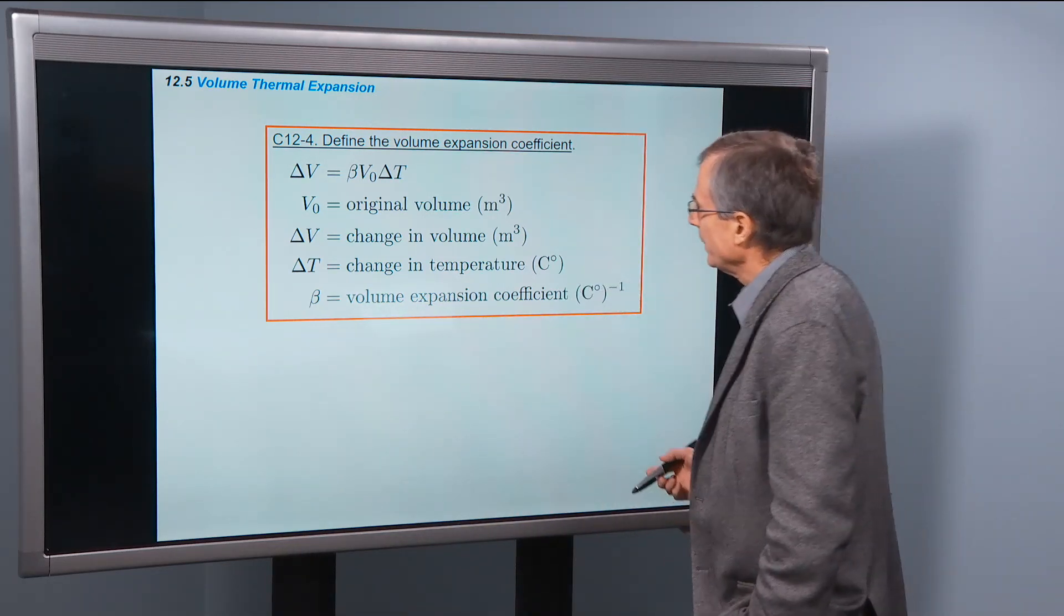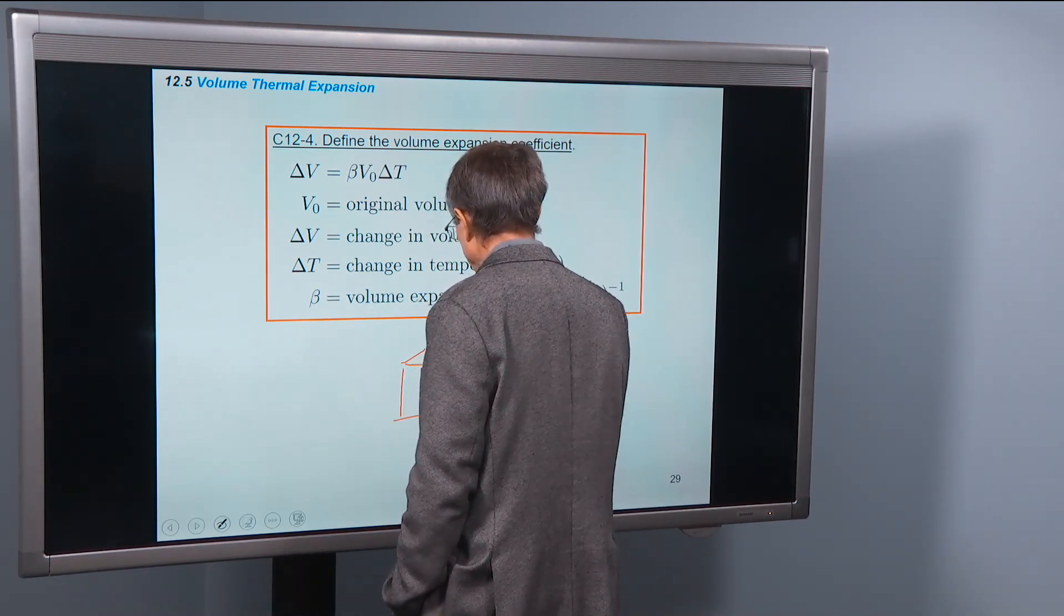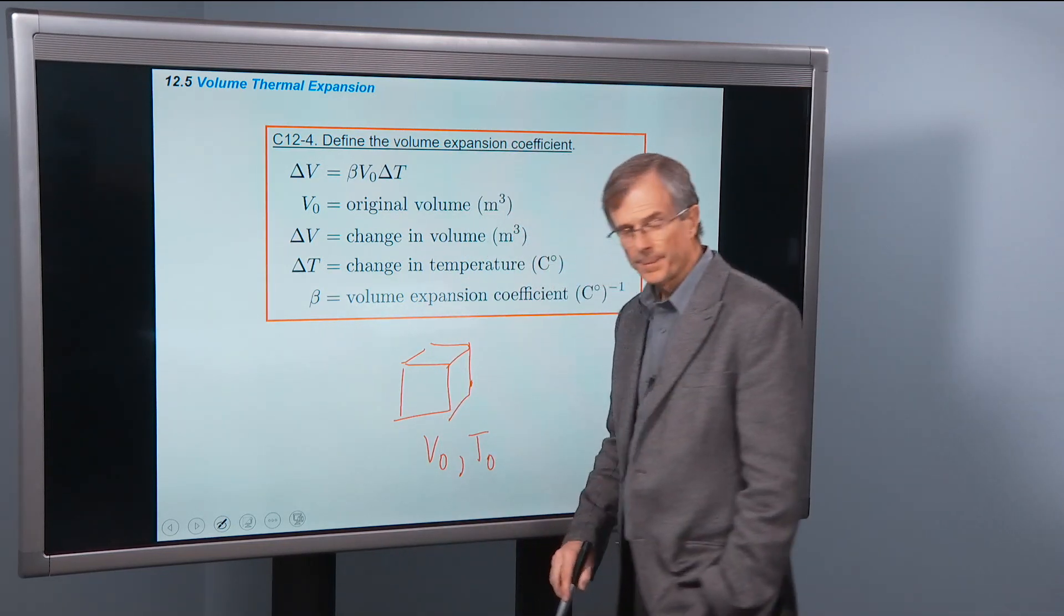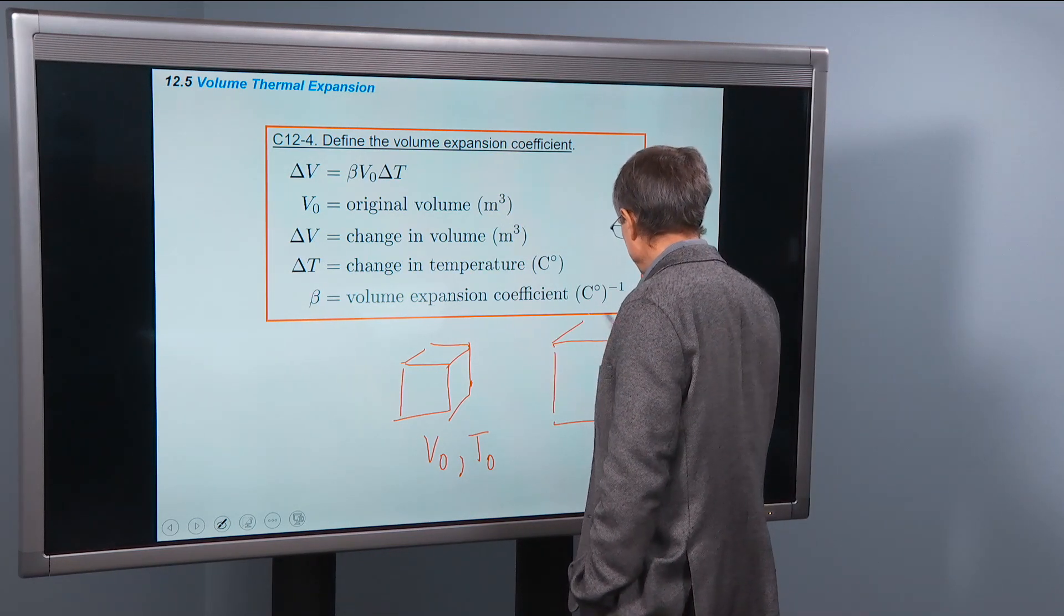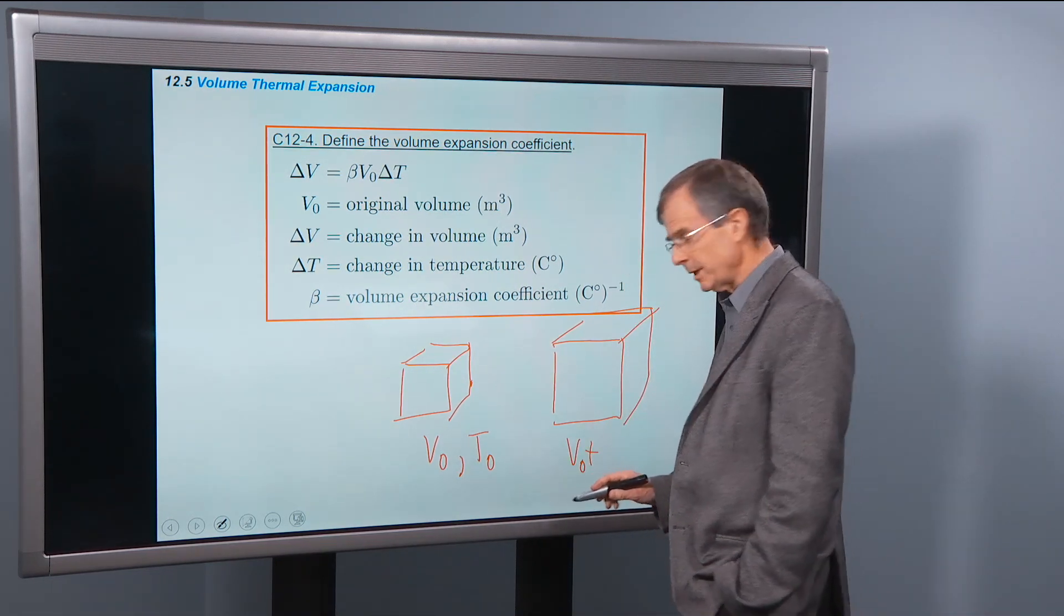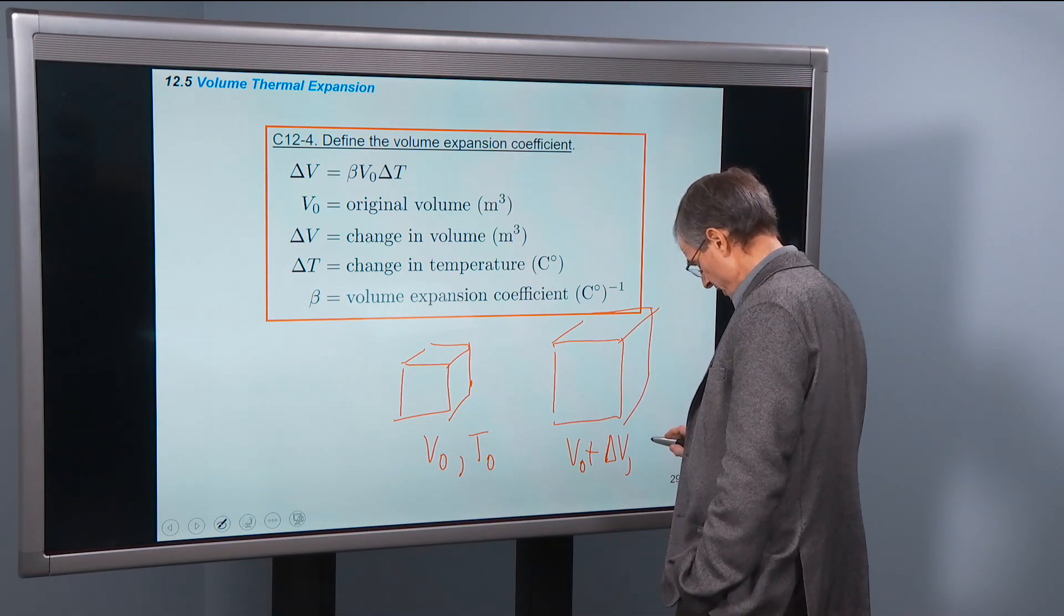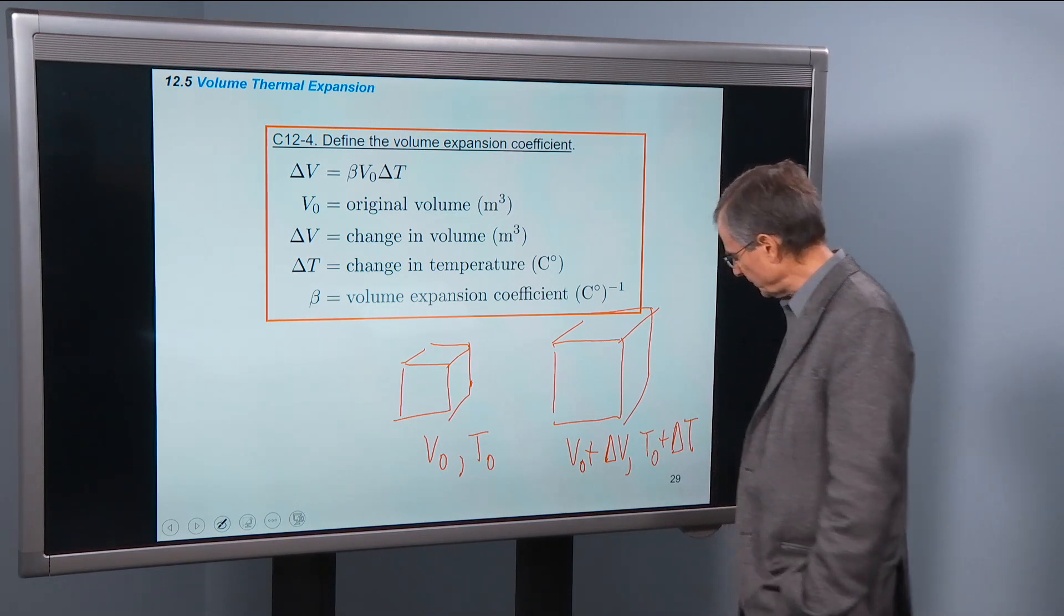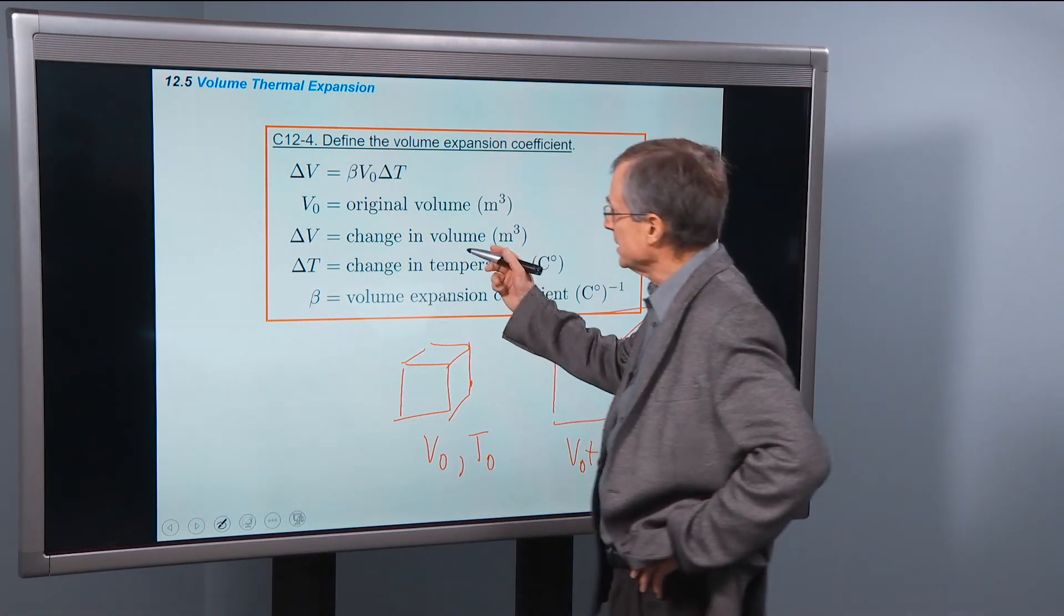So the initial volume, when the temperature is at the initial temperature, then the final volume, after you heat it up, is the initial volume, original volume, plus the change in volume. And the temperature is the initial, original temperature, plus the change in temperature. So that's what these symbols mean.